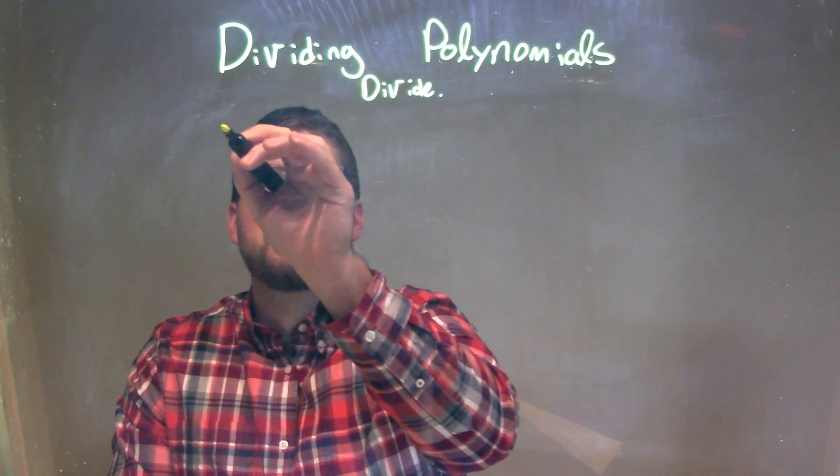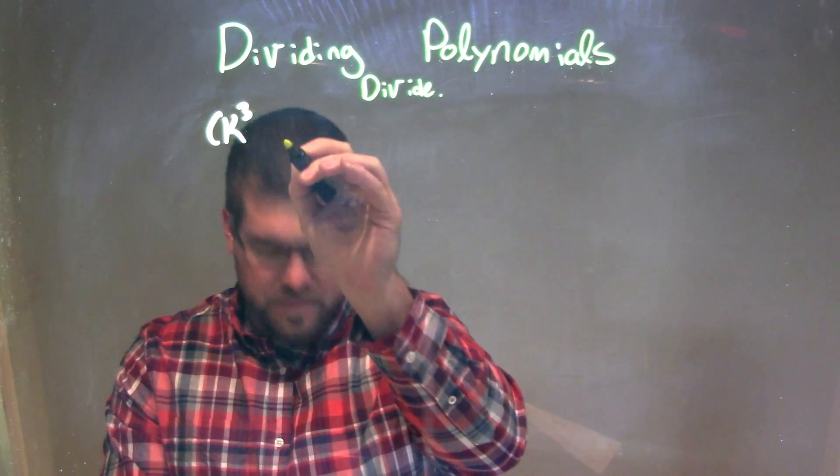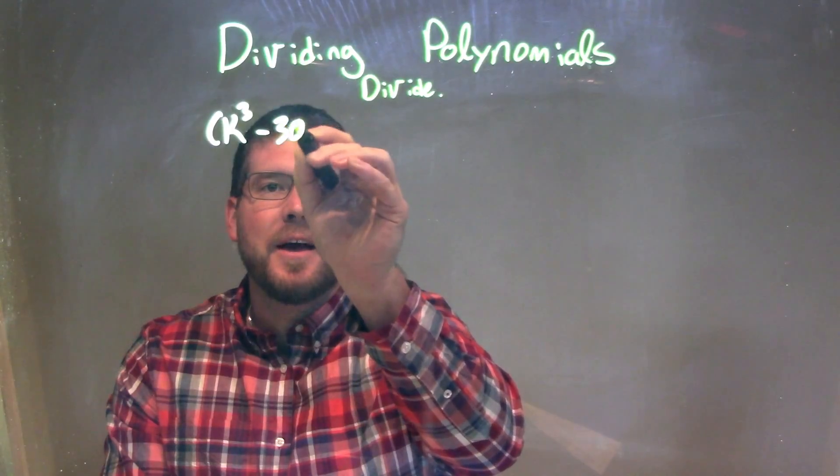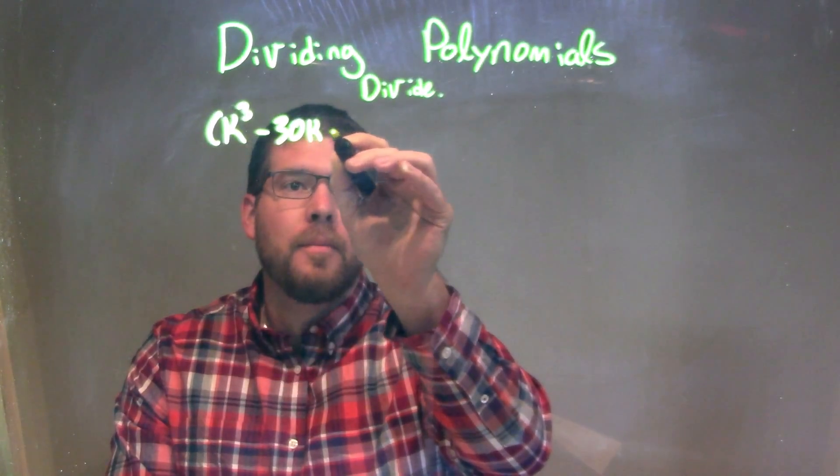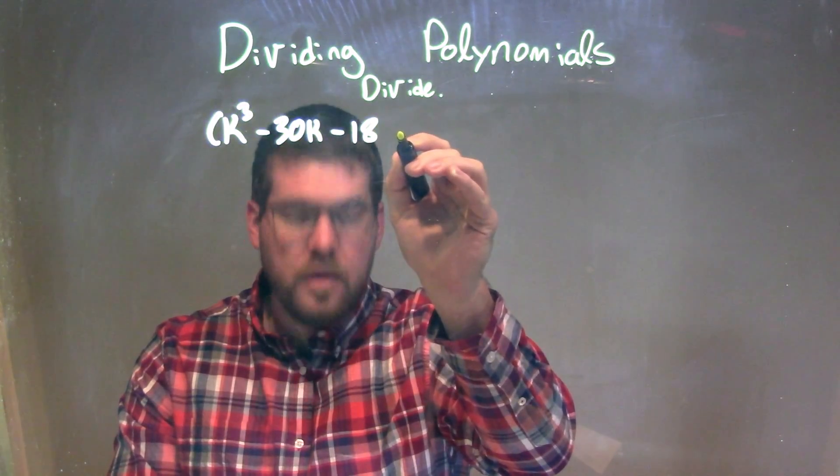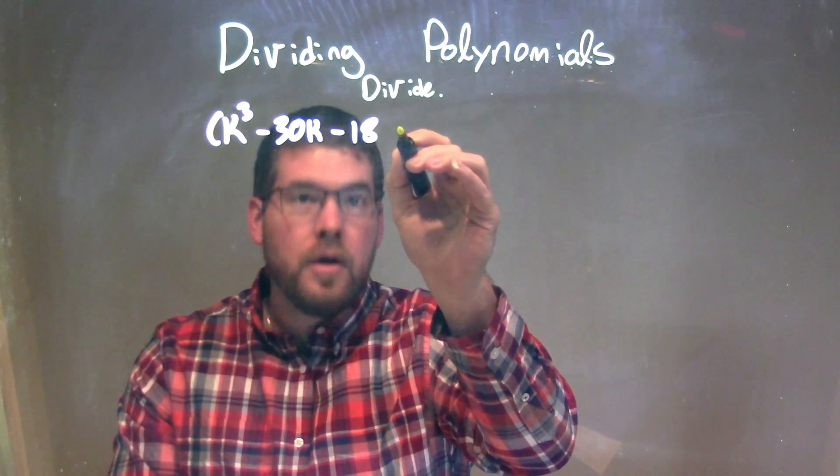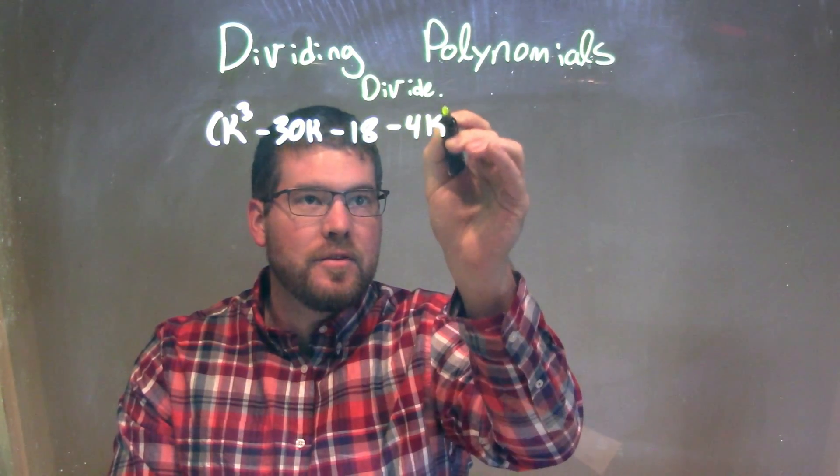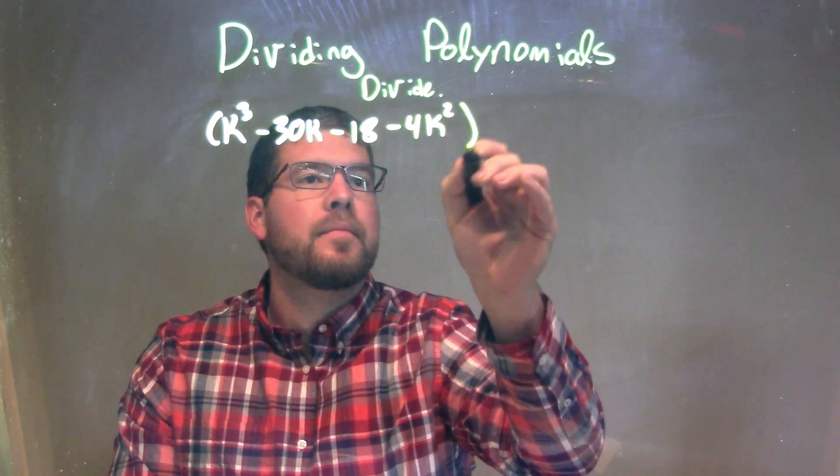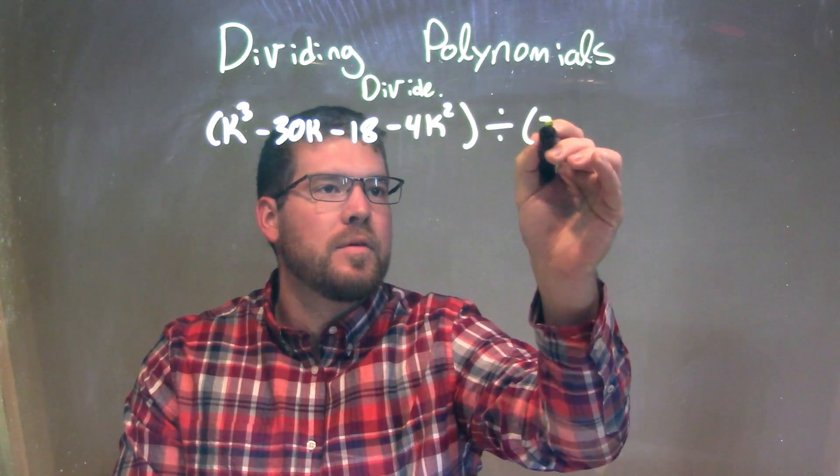So if I was given this problem here, k to the third minus 30k minus 18 minus 4k squared, divided by 3 plus k.